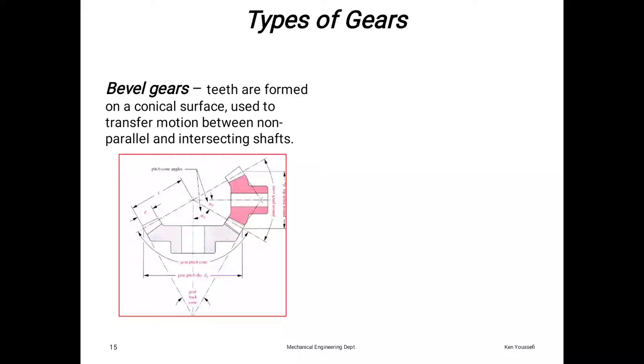Types of gear: bevel gear teeth are formed on conical surface, used to transfer motion between non-parallel and intersecting shafts. In this diagram you see the effect of bevel gear when putting lines between them.